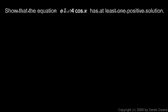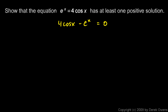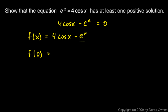One more example: show that the equation e to the x equals 4 cosine x has at least one positive solution, and we can do this with the intermediate value theorem. I'll rearrange the equation as 4 cosine x minus e to the x equals 0, and define f of x equals 4 cosine x minus e to the x. Then f of 0 is 4 times cosine of 0 minus e to the 0, which is 4 times 1 minus 1, giving us 3. So f of 0 equals 3.